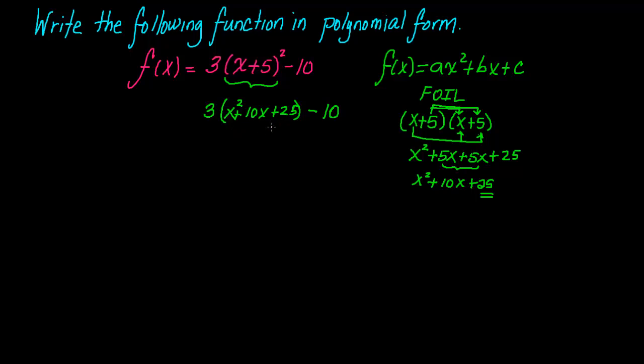Now that I've expanded the binomial, you can go ahead and distribute the 3, that's outside the parentheses, with each one of the terms inside. So 3 times x squared, 3x squared. 3 times 10x, that's plus 30x. And 3 times 25, that gives you 75, minus 10.